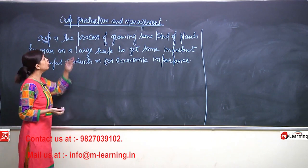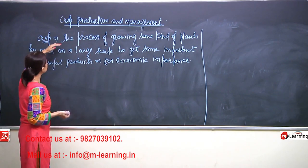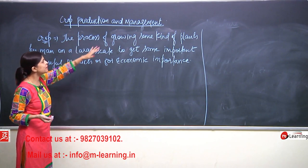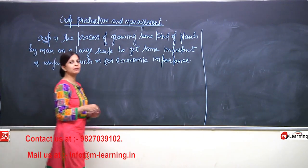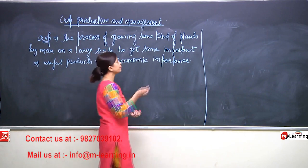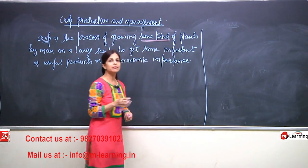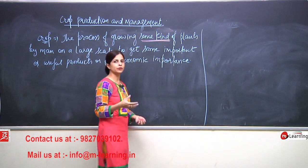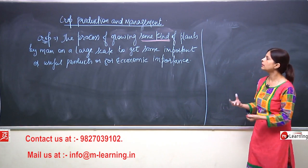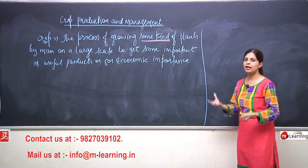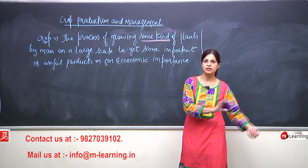Here we are discussing what a crop actually is — the process of growing the same kind of plants by men. Obviously, who is going to grow? Animals won't be growing. One word I am underlining here: same kind. When we talk about a field, in at least some particular area there should be the same kind of crops. It cannot be one wheat, then barley, then maize — no.